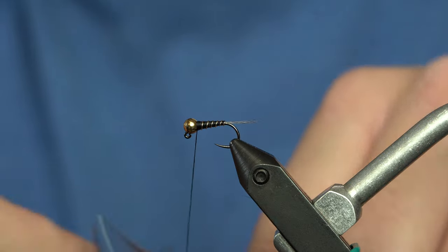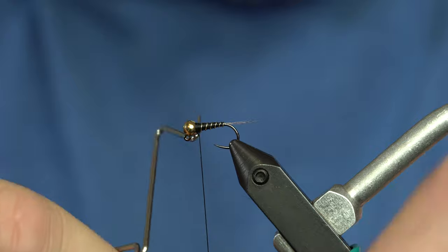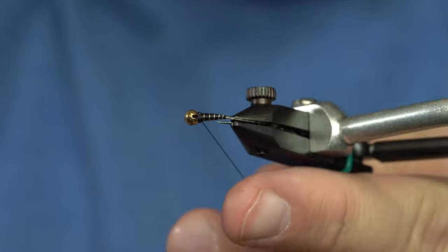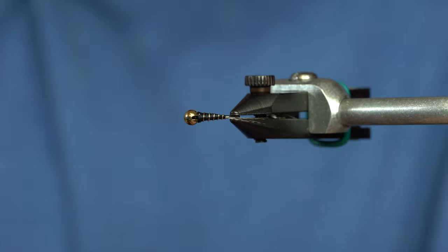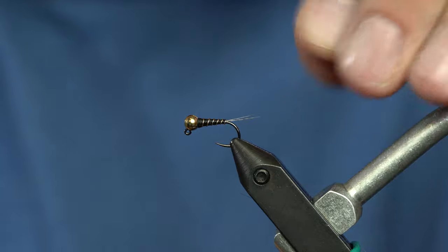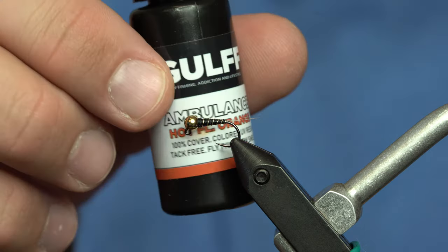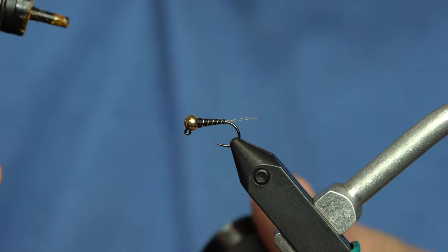We'll just catch that, tie it off, and throw a whip finish in there. Now, to finish this fly off, most Perdigons have a black little wing case on top of it. We're going to throw some of this UV resin in hot fluorescent orange on this one.